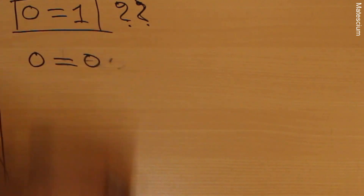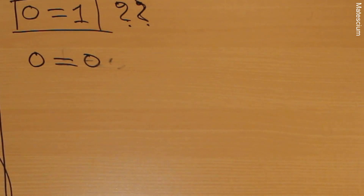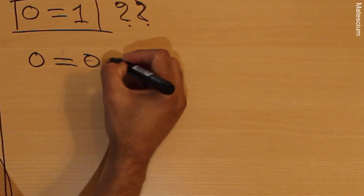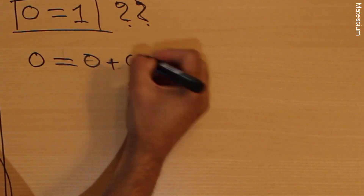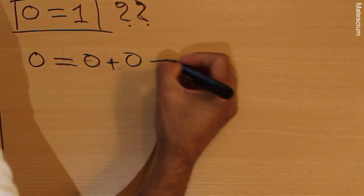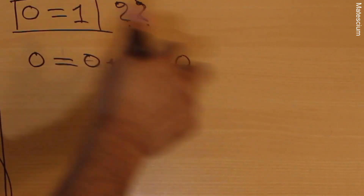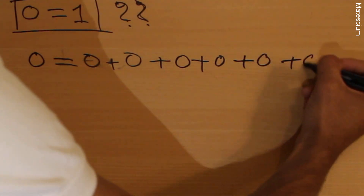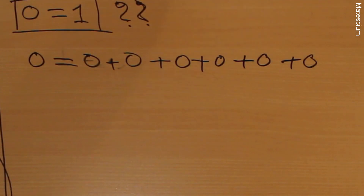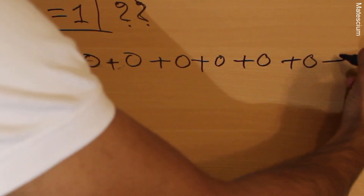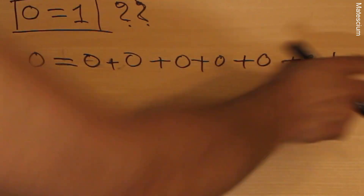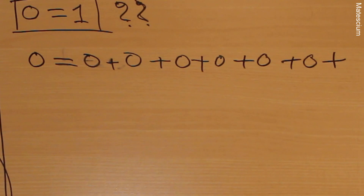I am going to go through a long calculation, but a very simple one. We know zero equals zero, and if I add another zero the result remains the same: zero plus zero equals zero, and again adding another zero gives the same result. If I add more zeros, going infinitely long, everything results in zero. That means zero equals zero plus zero plus zero plus zero, and so on.